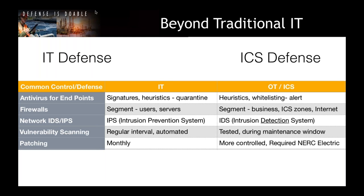Patching monthly is great in IT — everyone knows Patch Tuesday. In industrial control systems, patching is not as common but is becoming more so. NERC CIP compliance for electric utilities requires managing patches — specifically identifying available patches and within 35 days having a plan to install them or use compensating controls. Vendors are doing significant work in patching, testing their systems with the latest Windows patches for HMIs and PLCs. Patching during maintenance windows in industrial control environments is strongly advised.